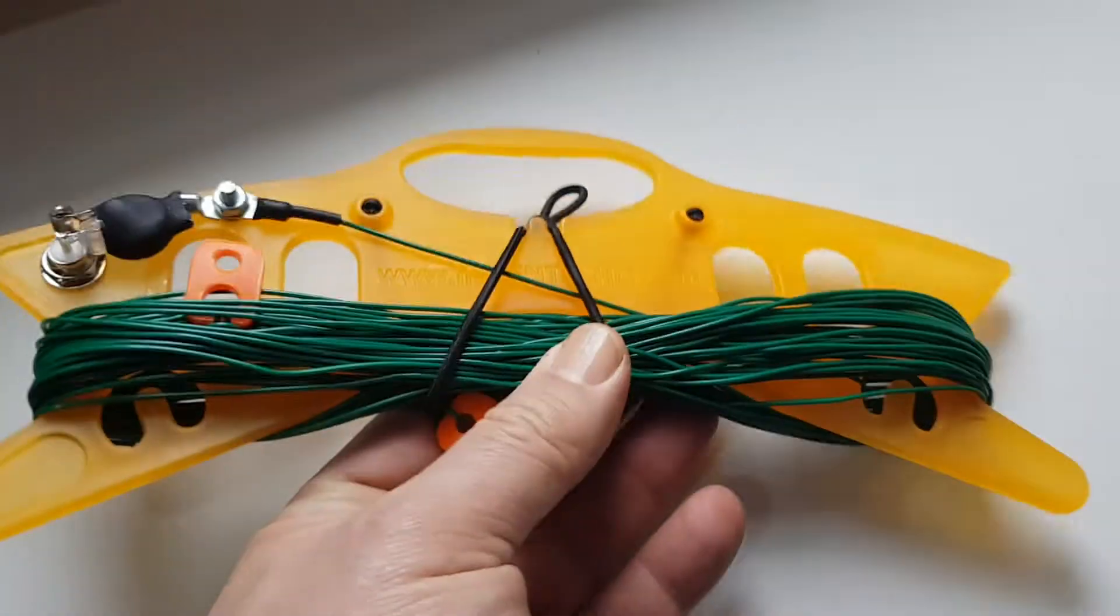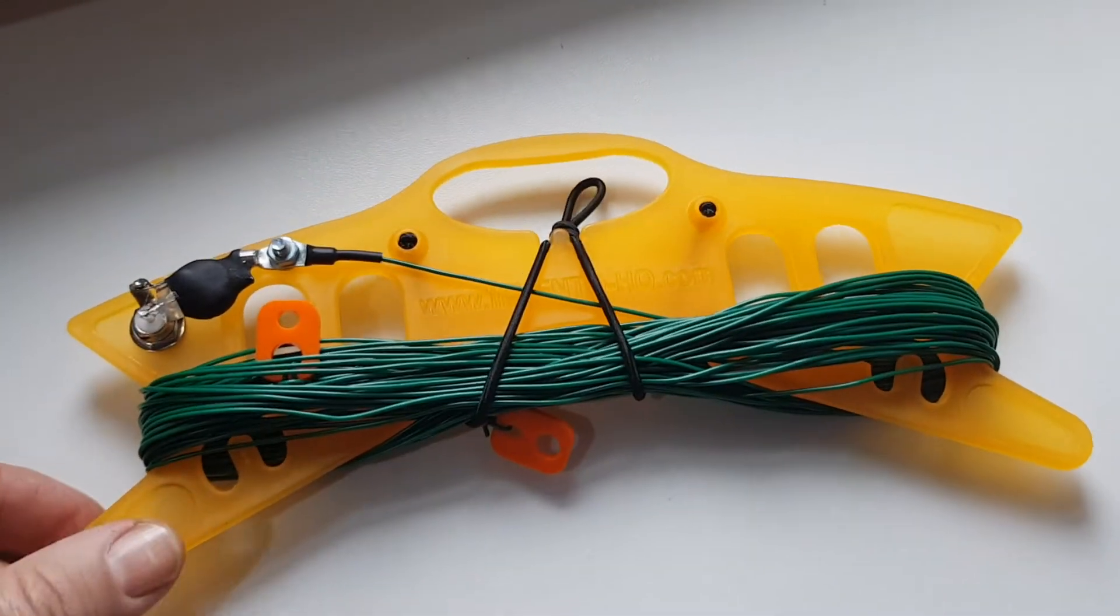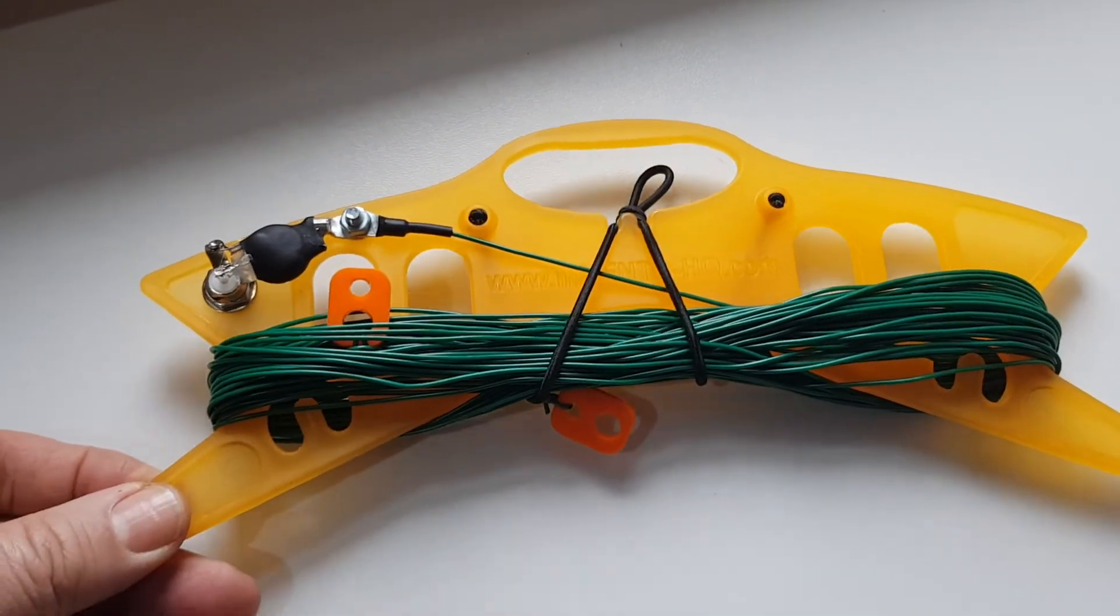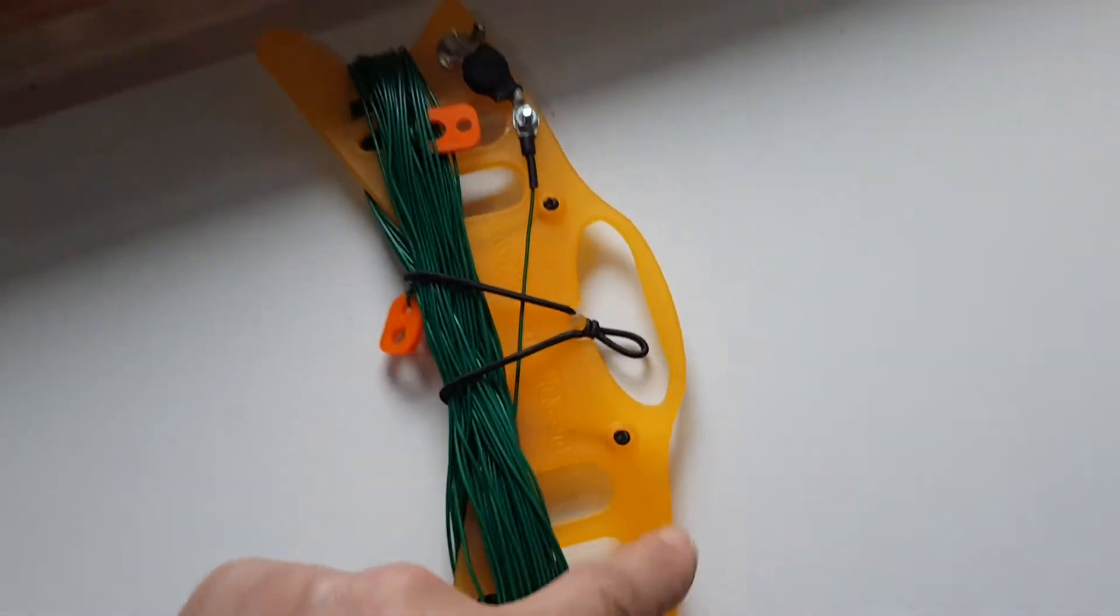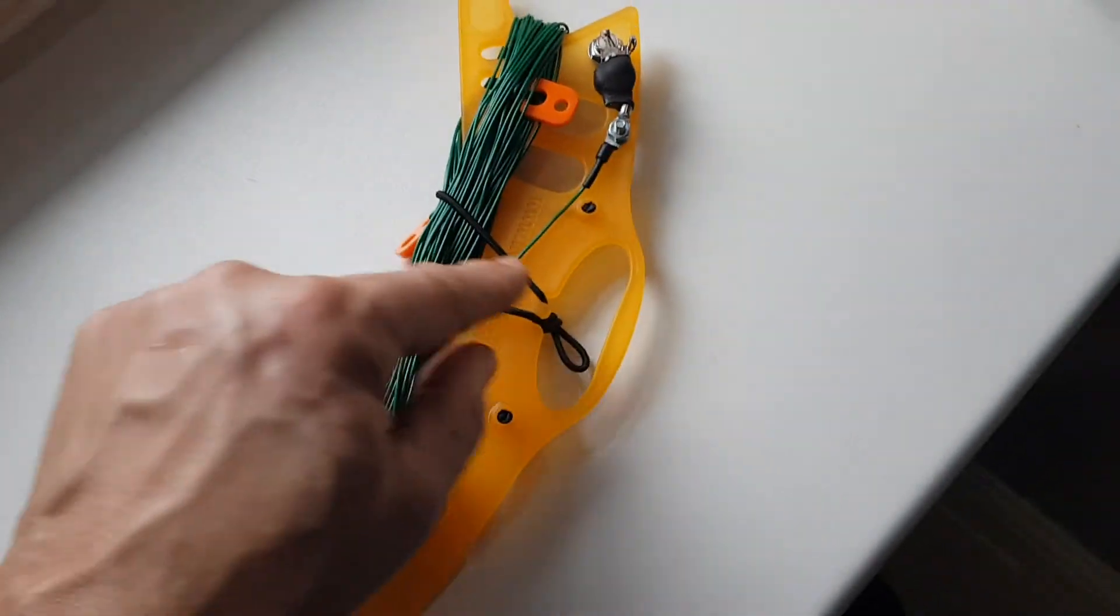This orange winder you can buy online. The idea is that once you unclip from here and clip the orange tab to something like a post or even a tree...